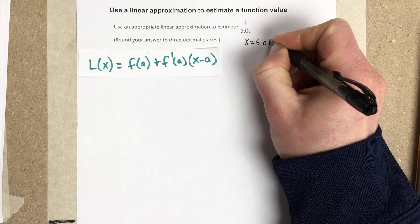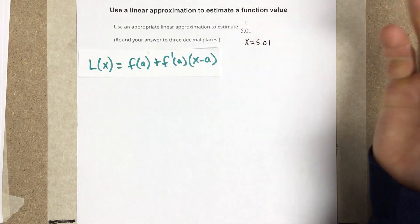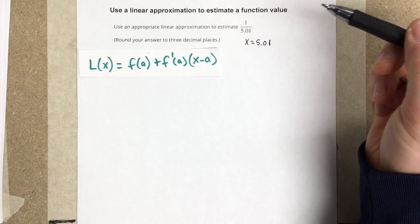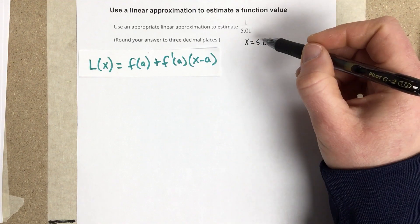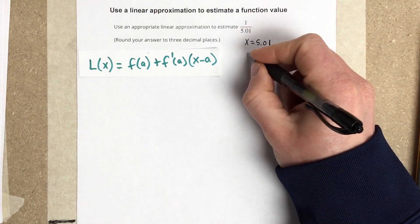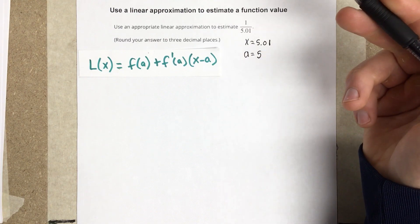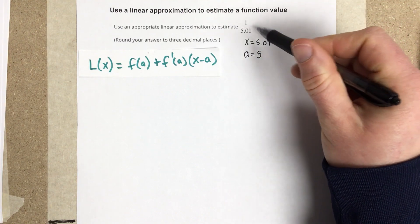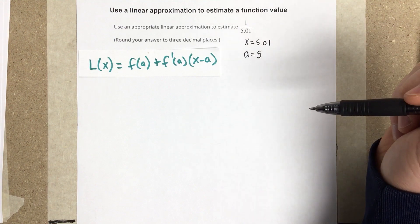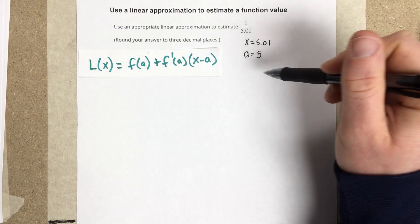So I'm going to pick a value that's close to that so I can basically find the approximation. I know that 1 fifth is 0.2. So if I pick 5 for my a value here, I can use a tangent line essentially to estimate what 1 divided by 5.01 would be based on what 1 divided by 5 is.